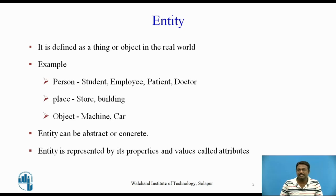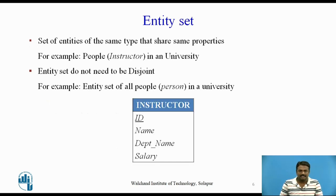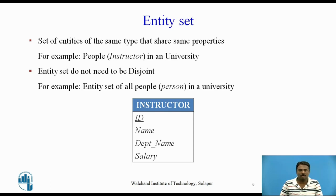An entity is represented by its properties and values called attributes. An entity set is a set of entities of the same type that share the same properties or attributes. For example, the set of people who are instructors at a given university can be defined as the entity set instructor. Entity sets do not need to be disjoint — it is possible to define the entity set of all people in a university, where a person entity may be an instructor entity, a student entity, or both, or neither.